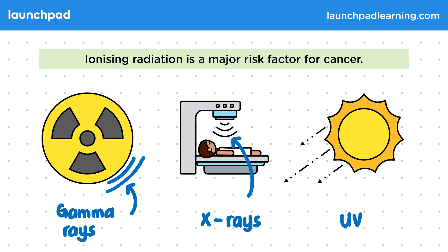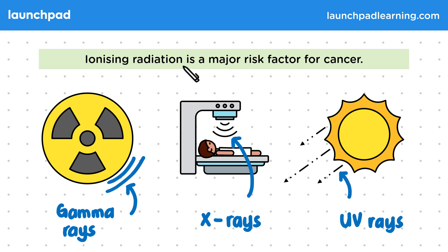UV rays are a type of radiation from the sun or UV light. Most skin cancers are caused by UV radiation, which is why it's really important to wear sun cream. A way of remembering that all of these are types of radiation: you may notice that each contains the word 'ray', which sounds like the start of the word radiation.